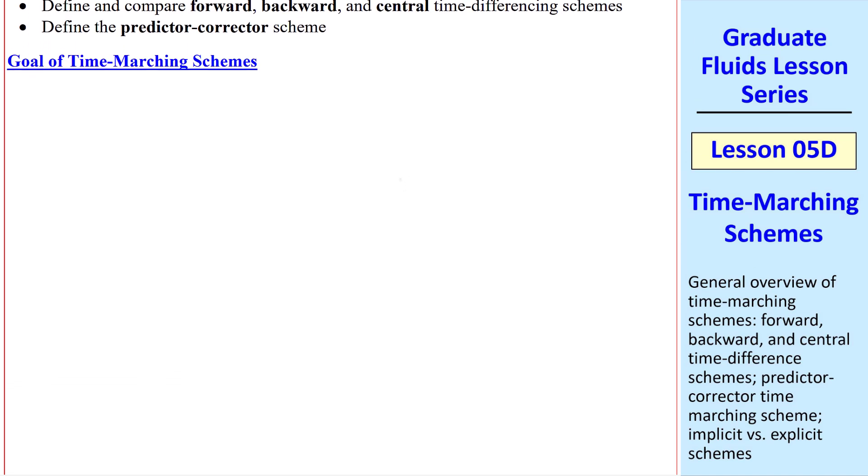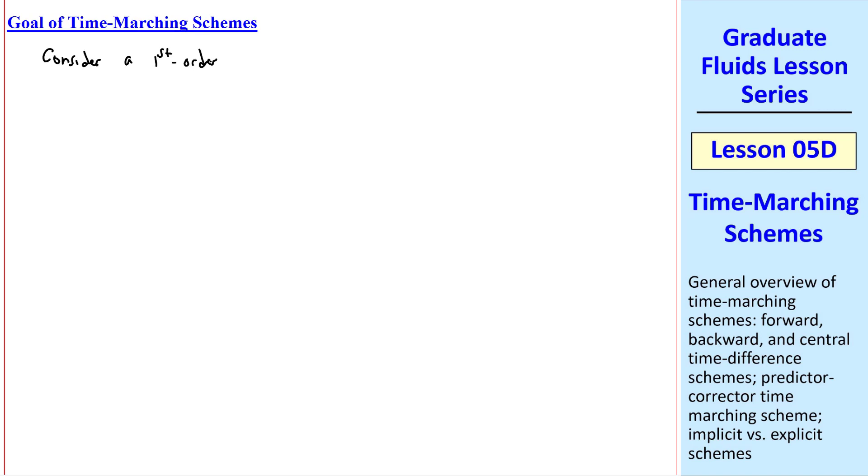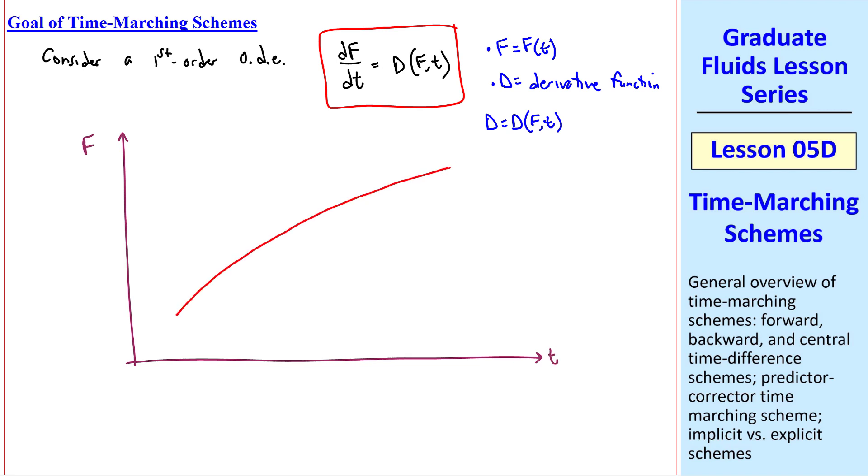First, let's look at the goal of any time-marching scheme. Let's consider a first-order ordinary differential equation, namely df/dt equal capital D of f and t, where f is some function of time that we're trying to predict. D is the derivative function. D can be, in general, a function of both time and or function f. And as you see here, D is the derivative of f with respect to time. In general, this equation can be non-linear. Suppose we plot f as a function of time, and suppose this is the exact solution. At time tn, f is known. We'll call it fn, where n is just an index, not an exponent, kind of like a subscript.